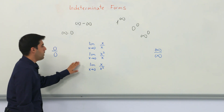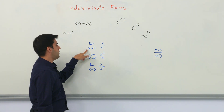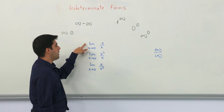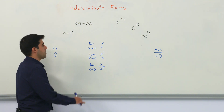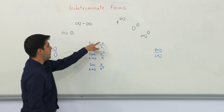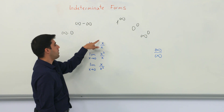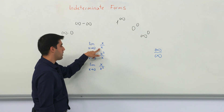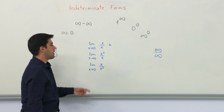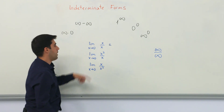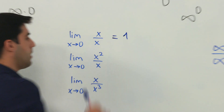Let's see a simple example. As x goes to 0, what is the limit of x over x? When x goes to 0, this is 0 over 0. However, when we calculate this easy limit, it's just 1, because x over x is 1.